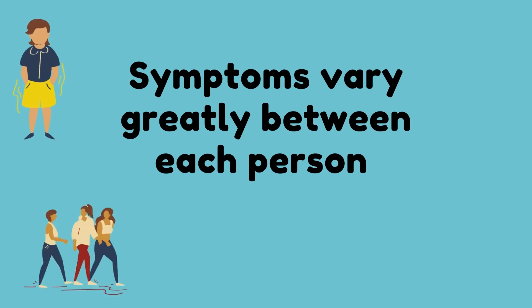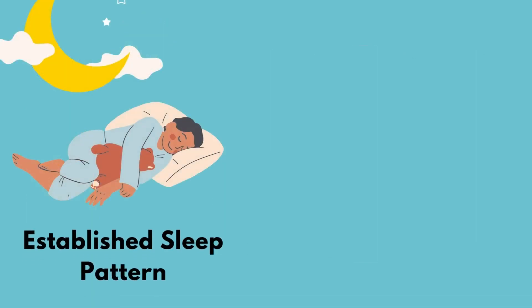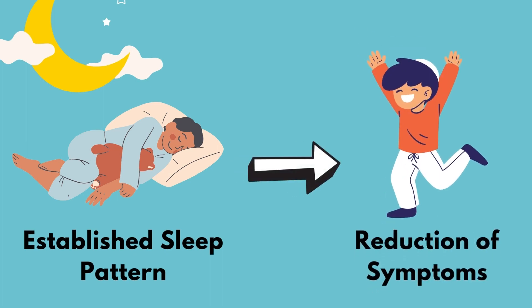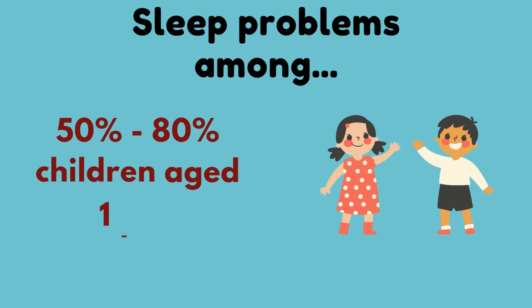Since ASD has varying effects from person to person, it is important to have a general base as to what can help these individuals as a whole improve their quality of life. This can be done by having an established sleep pattern, as having a good quality of sleep will lead to lowering symptoms of autism experienced the next day. There is a high prevalence of sleep problems common among children with ASD, between the ranges of 50 to 80 percent found in children aged 1 to 3. Sleep problems typically start occurring when a child is around 30 months, however it is still reported by adults with ASD as it can be chronic.